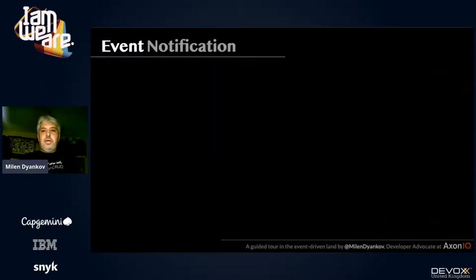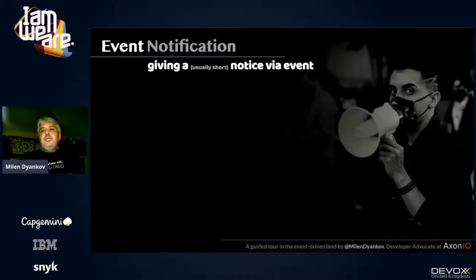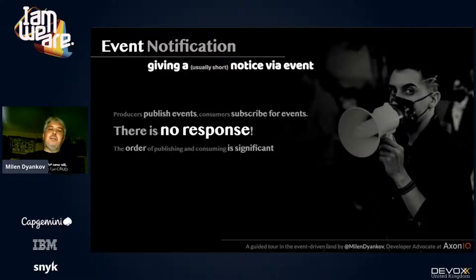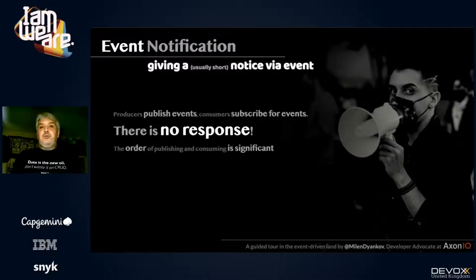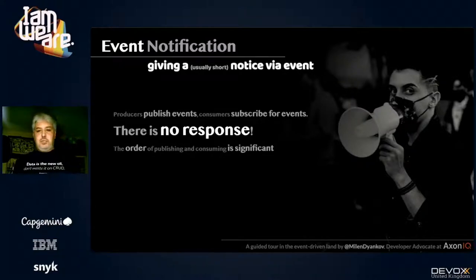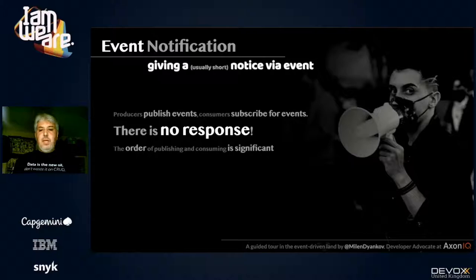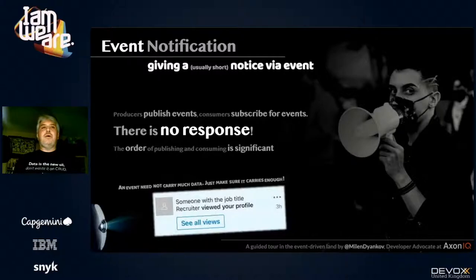To go into the technical side, there's a concept from Martin Fowler's talk called Event Notification, which grew very popular. An event notification is a short notice that something has happened. It shares the common characteristics of every event: someone publishes and someone subscribes, and it does not expect any response. The producer does not expect any action. The order in which events are published and consumed is often significant, though some people argue it is not.